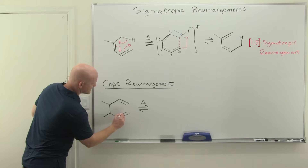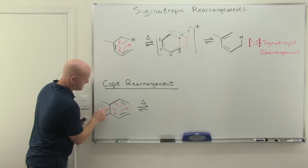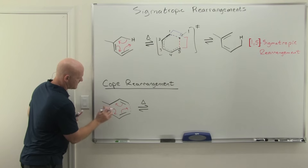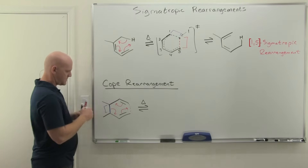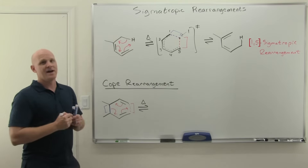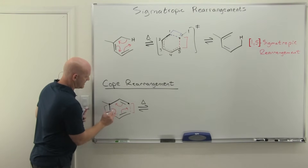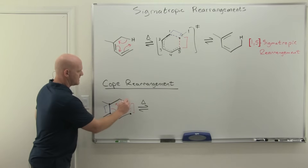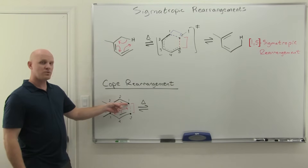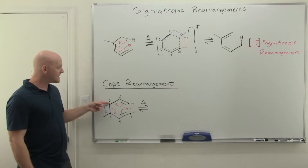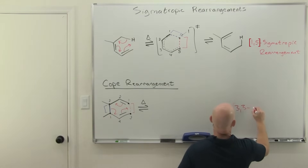We look at the cyclic movement of electrons — we're going to form a new sigma bond right here and break one right here. I'll redraw the breaking bond in blue so we can keep track. We've got the sigma bond we're breaking there and the sigma bond we're forming there. How many atoms does it take to go from here to here on each side? One, two, three — one, two, three. That's why we refer to this as a 3-3 sigma-tropic rearrangement.